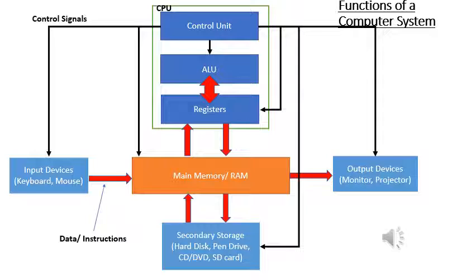Now we will discuss the functions of a computer system. In a computer system there are several components: the CPU, input devices, output devices, main memory, and secondary storage devices. The CPU contains three main components: a control unit, ALU, and registers. Each device — input devices, output devices, and secondary storage devices — communicates with the CPU through the RAM.